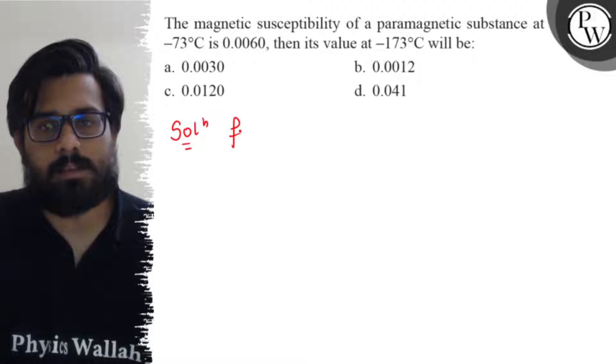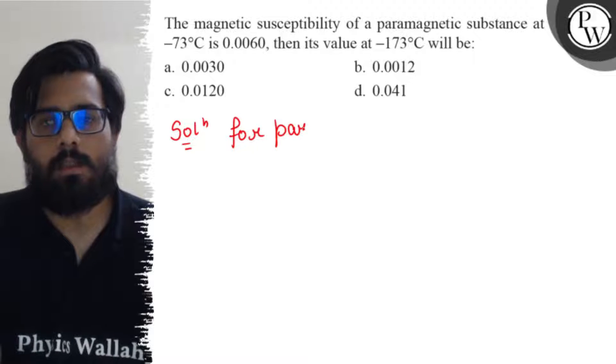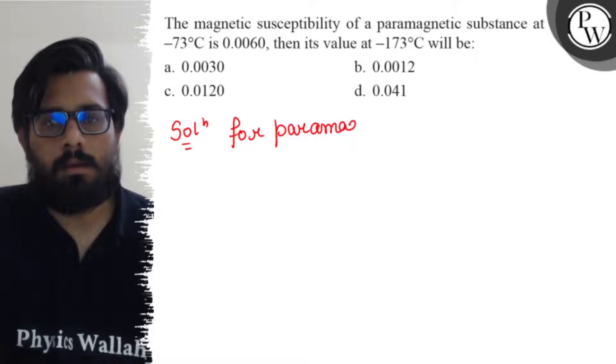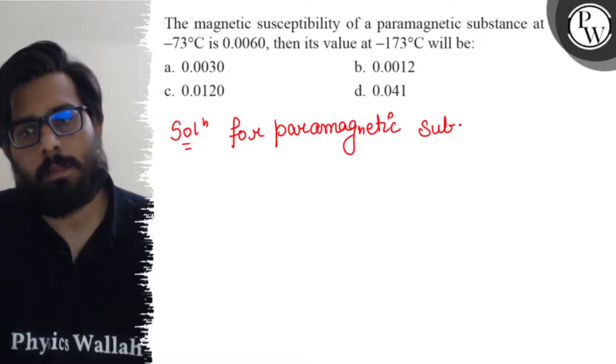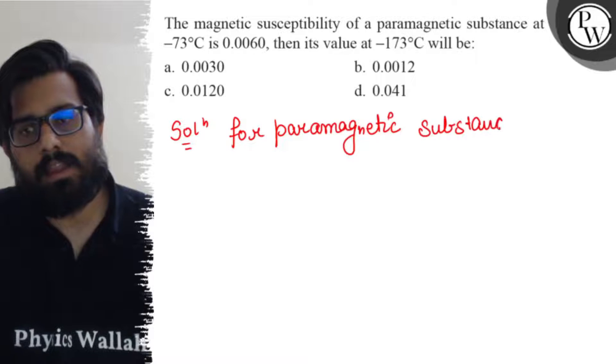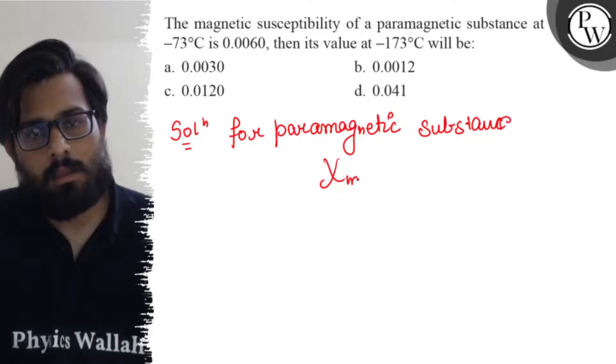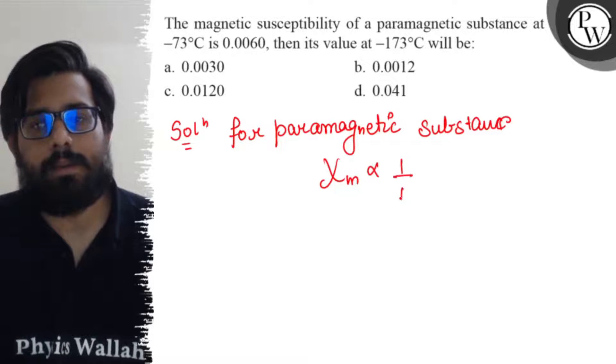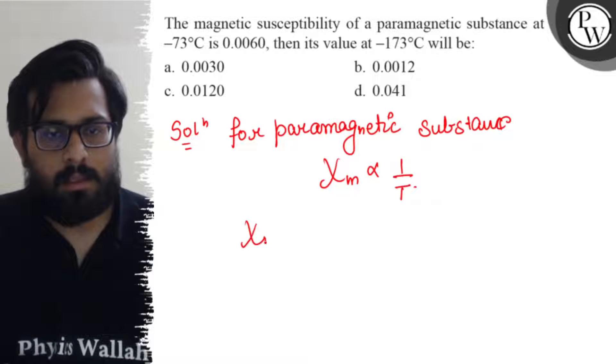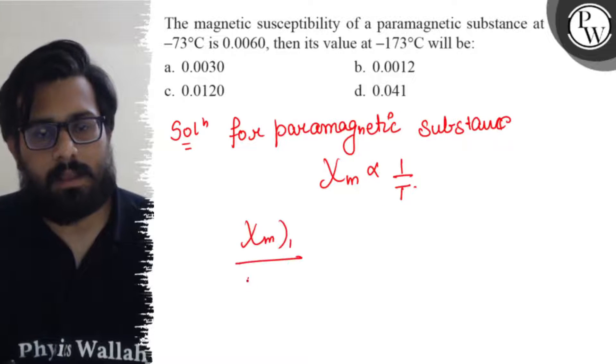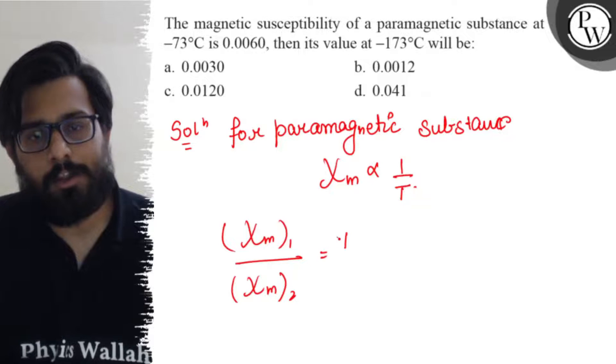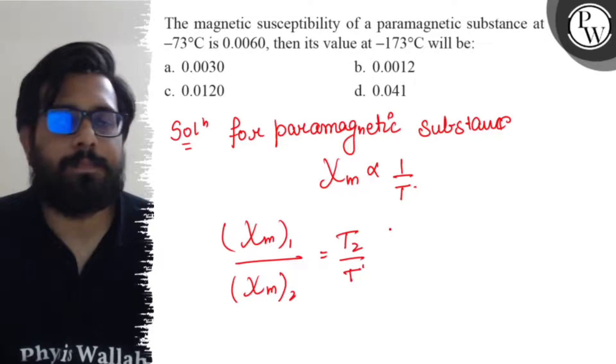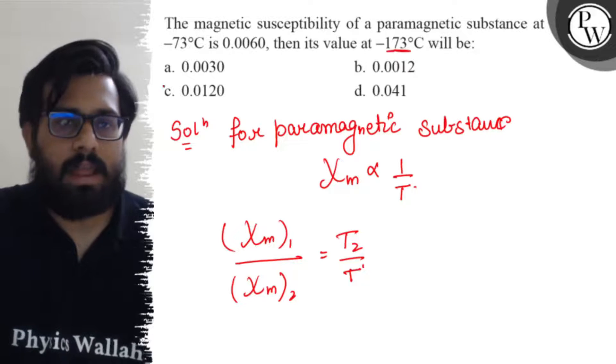For paramagnetic substances, the susceptibility is inversely proportional to the temperature. So χₘ in the first case divided by χₘ in the second case, that will be equal to T₂ by T₁. So T₂ is this one and T₁ is this one.